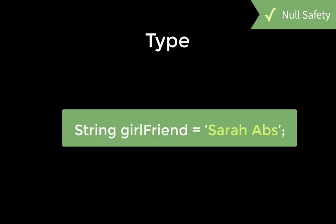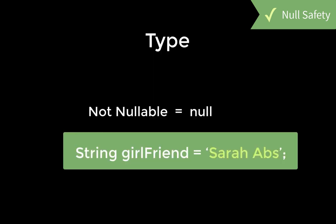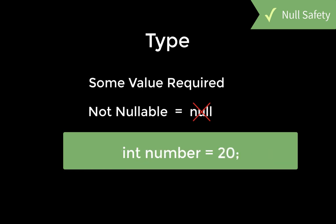Now that we have null safety activated, all of our types are by default not nullable, which means they are requiring some value. So for example, a string, an integer, or also a color needs to have a real value.